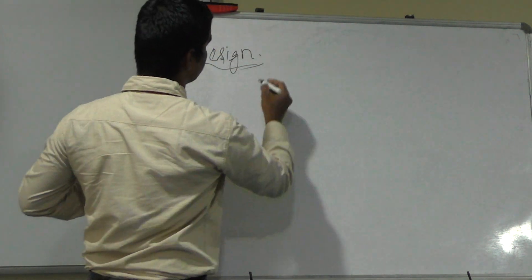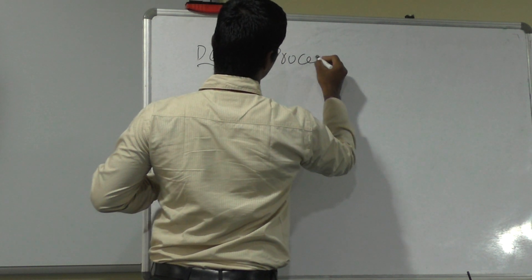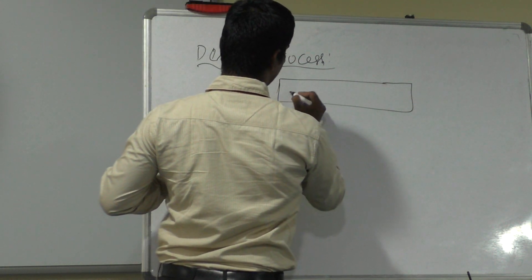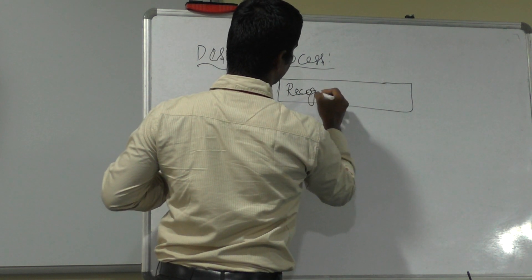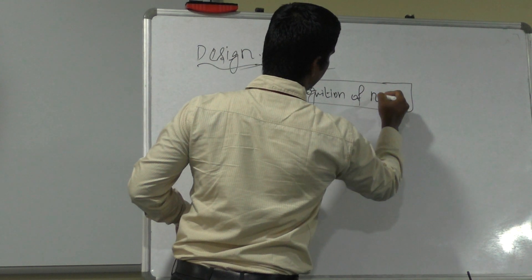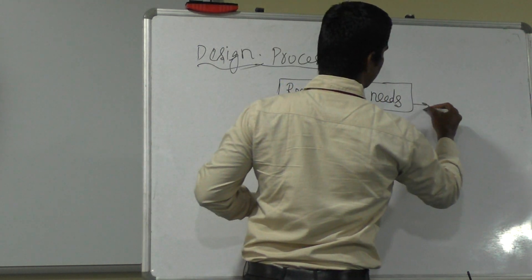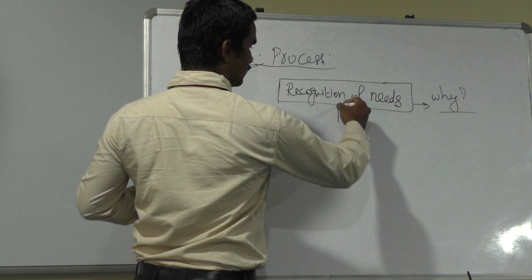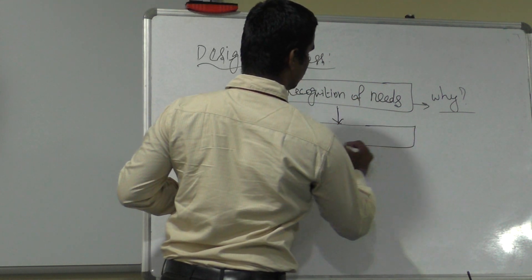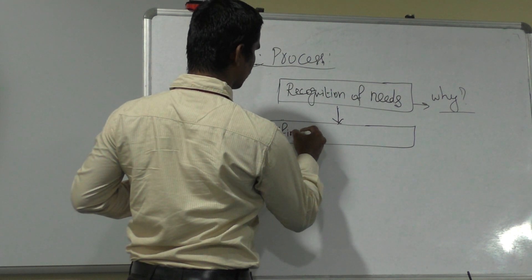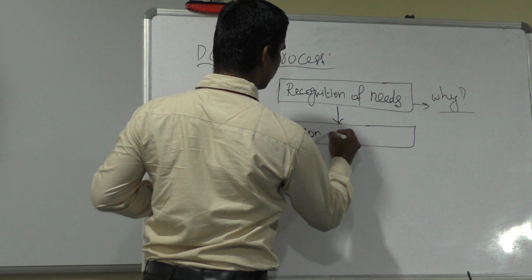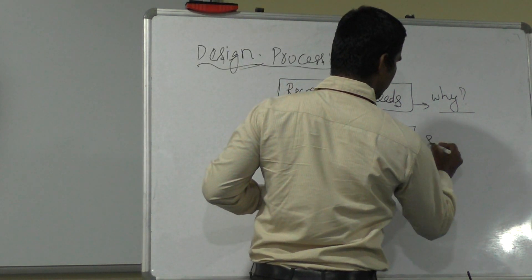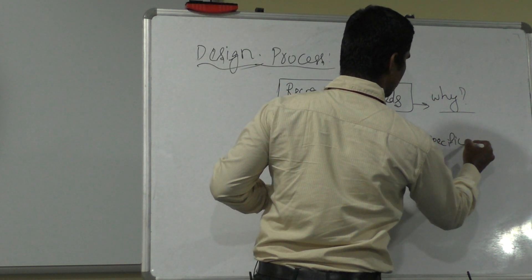Next, the design process. Simply, design starts with a problem. The first stage is recognition of need — this is why we design. The second stage is definition. Definition includes specifications and characterization — those types of elements.